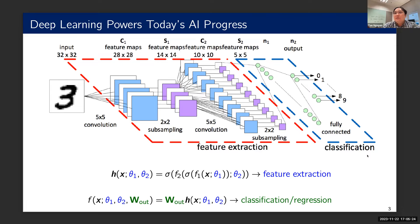At each layer, the model tries to extract a useful representation of the image, and at the end it obtains a good set of features that can be used for downstream tasks including classification or linear regression. In general a deep learning model contains two parts: the feature extraction part and the downstream model for classification or regression.